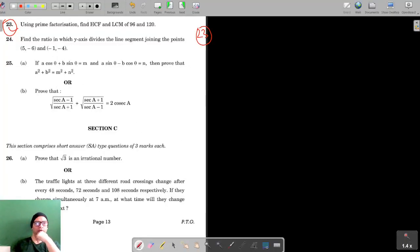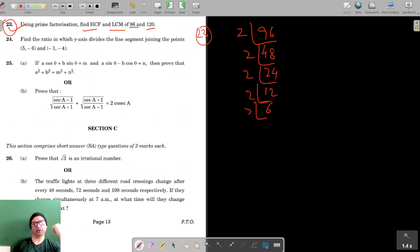Okay, for question number 23 we're using the prime factorization. We have to find the HCF and LCM of 96 and 120. So let's prime factorize 96: this is 2, 48, 24, 12, 6, 3. Now 120 is 2, 60, 30, 15, and 3 into 5.